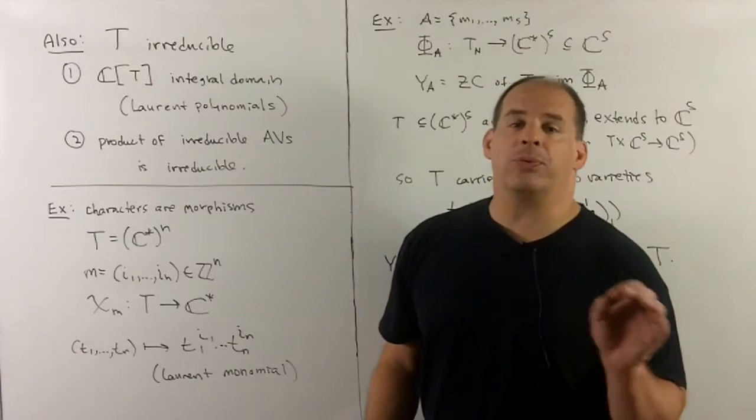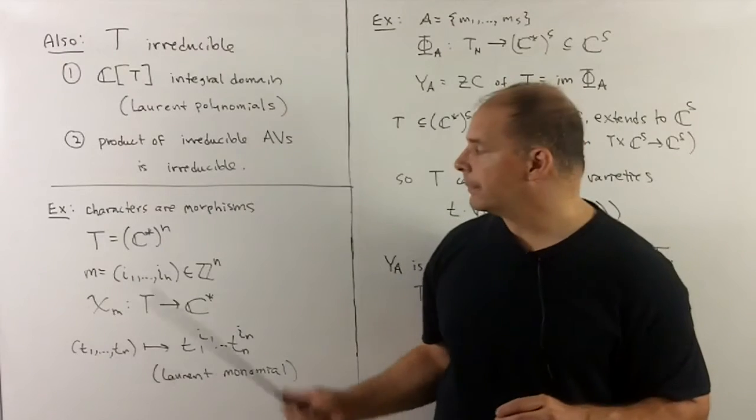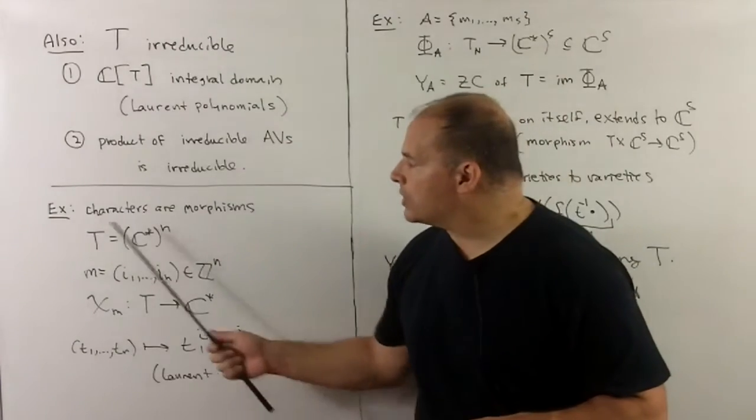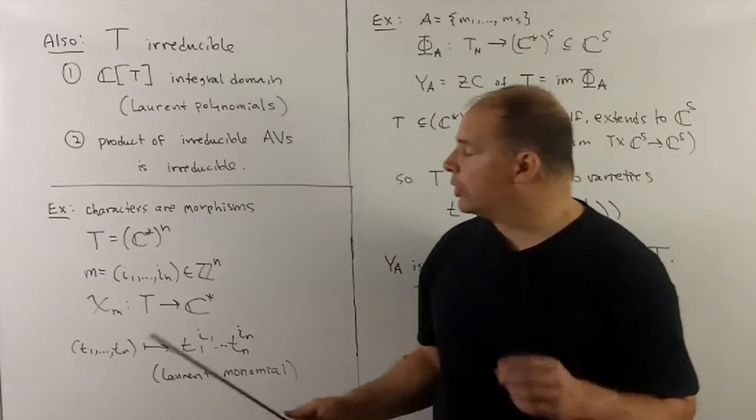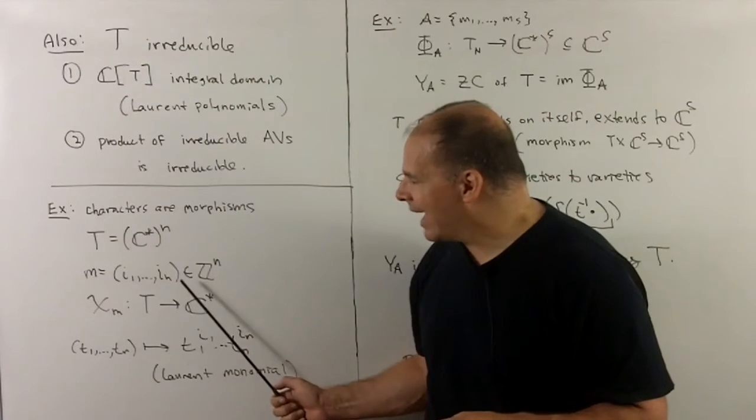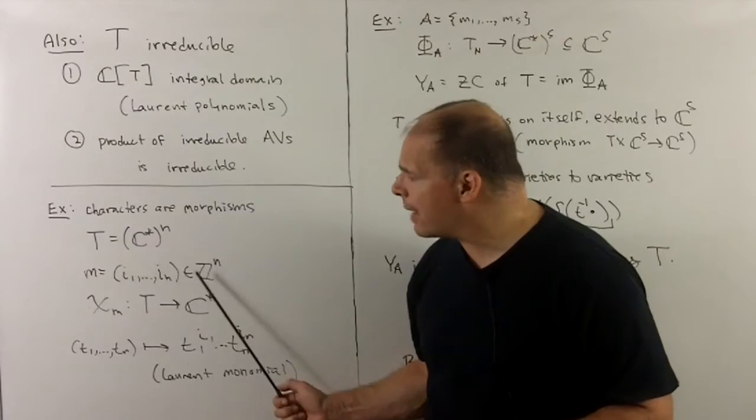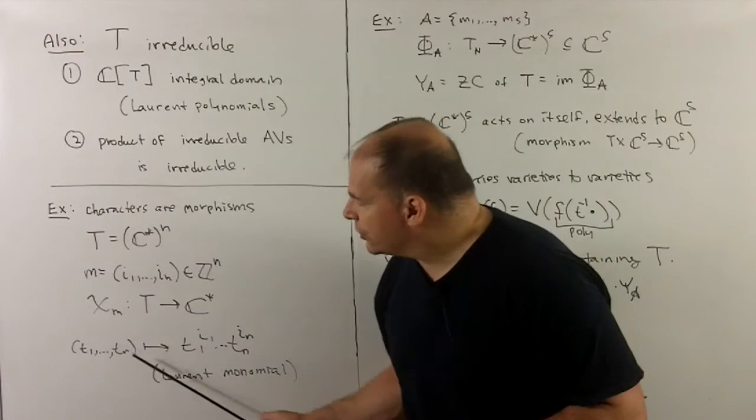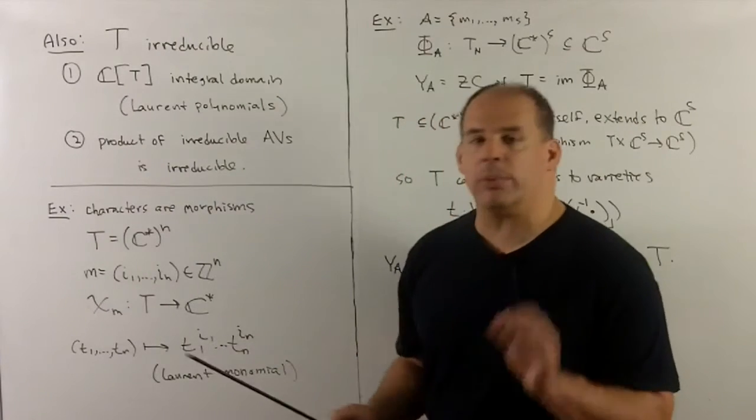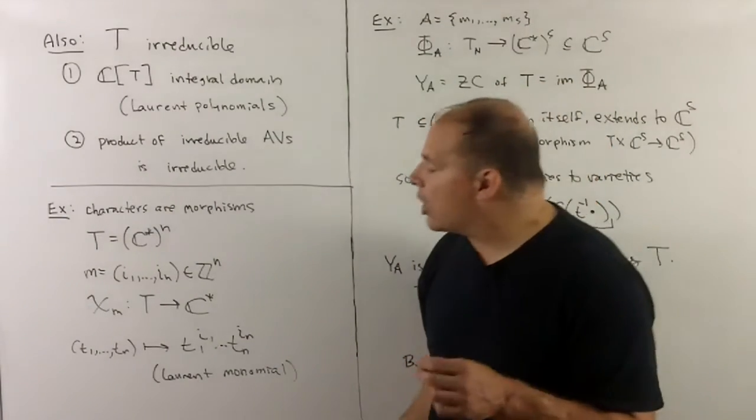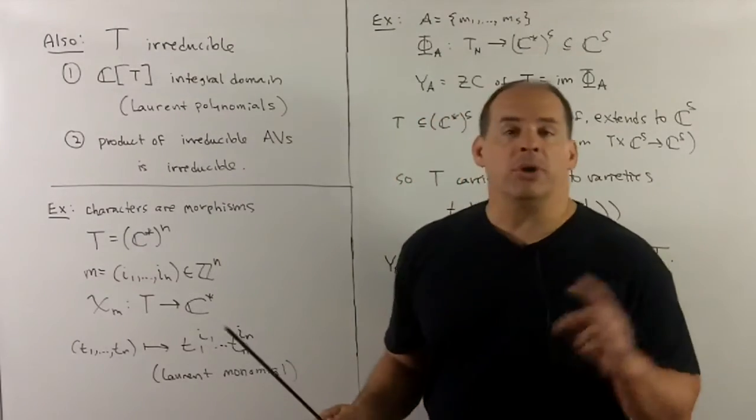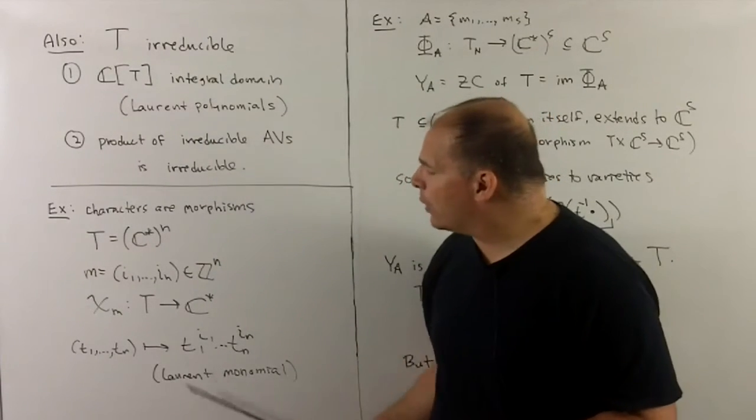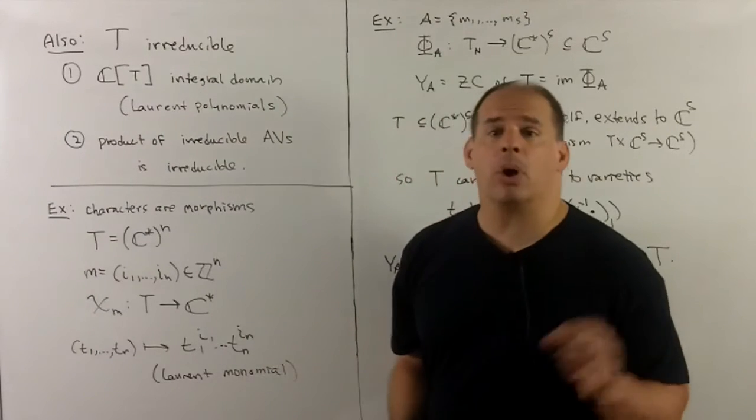Now, let's check a few facts from before, just for more work with morphisms. First, we note that characters are morphisms. So what's the setup here? We have our torus T equal to C-star^N. To build a character, we're going to choose an n-tuple of integers, say i1 through iN. We can also have zero or negative integers in there. And then we're going to have a map from our torus into C-star. So the way we build this up, we take T1 through TN, we raise to the appropriate power from our tuple, and then we multiply everything together. It's not hard to see that this is a homomorphism, because we have Laurent monomial on the right-hand side. That's going to be in the coordinate ring, and so we have a morphism also. So that means characters are morphisms.